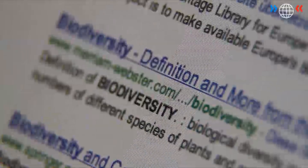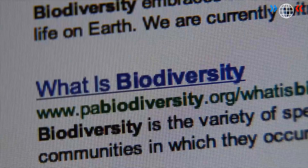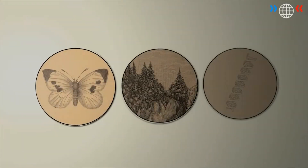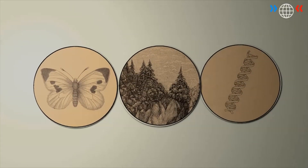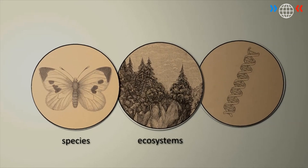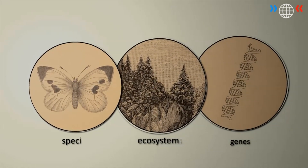Biodiversity. That's a word you may have heard before, but what does it really mean? Biodiversity occurs on three levels: species, ecosystems and genes.